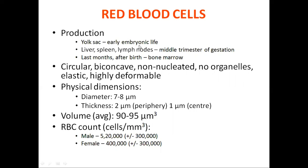RBCs are produced at different sites during development. In the first trimester of fetal life, they are produced in the yolk sac. In the second trimester, they are formed in the liver, spleen, and lymph nodes. In the third trimester and after birth, they are formed in the bone marrow. Up to 20 years, they are formed in all bones, but after 20 years, mainly in the bone marrow of membranous bones.